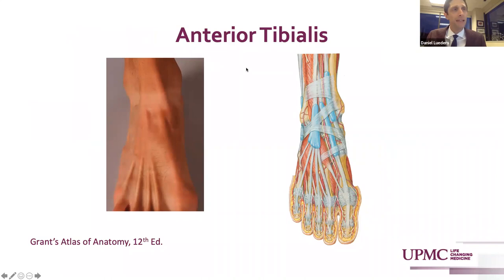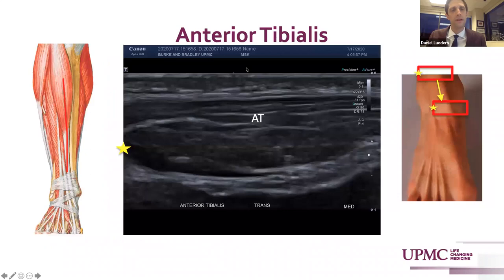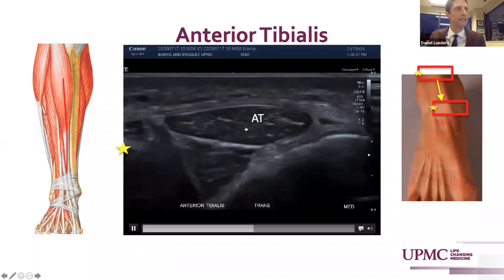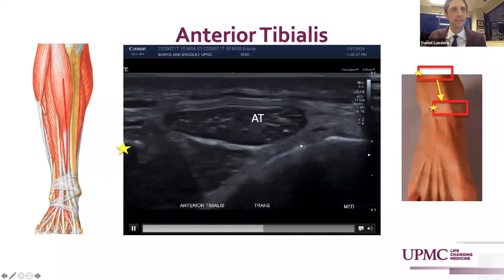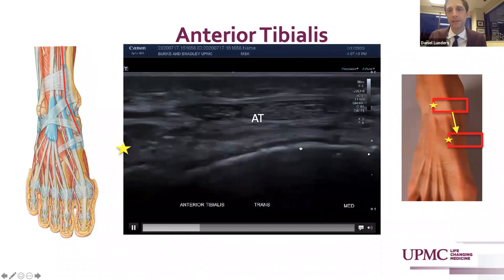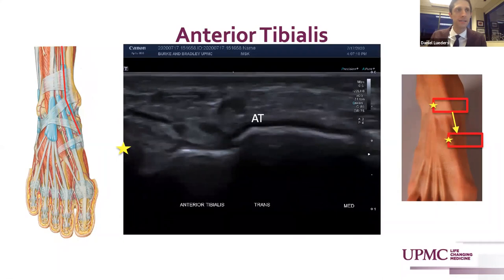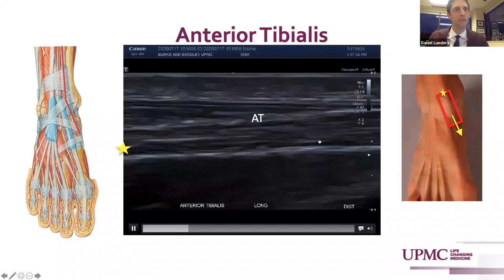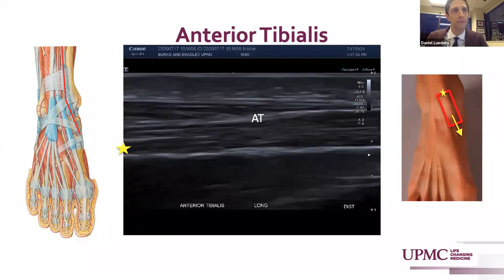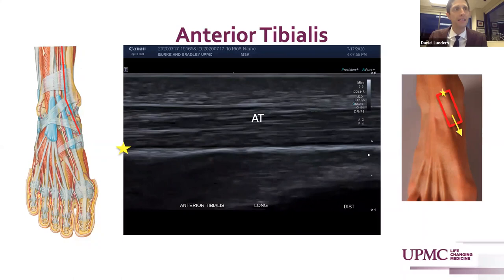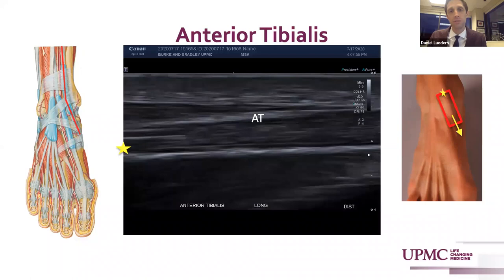The anterior tibialis is the largest tendon in the anterior ankle. It's held down by the superior retinaculum. It courses across the anterior medial leg adjacent to the tibia and becomes a large hyperechoic ovoid-looking tendon in the anterior leg adjacent to the medial tibia. As it courses over the anterior ankle joint, it maintains that densely hyperechoic ovoid shape until it flattens toward its distal navicular insertion. It should also be evaluated in long axis, where the anterior tibialis maintains its same caliber of densely packed laminar appearing hyperechoic tendon fibers. Any bulbous deformity or swelling or peritendinous fluid would suggest a tenosynovitis or tendinosis.